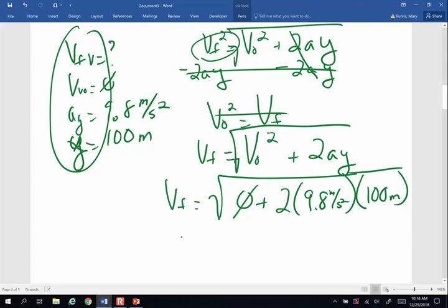At this point in time, some people say, wait a minute, the package is falling down. Doesn't that mean I have to have a negative 9.8 meters per second squared?